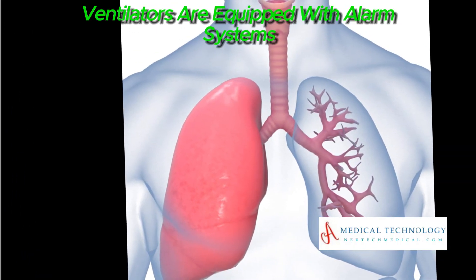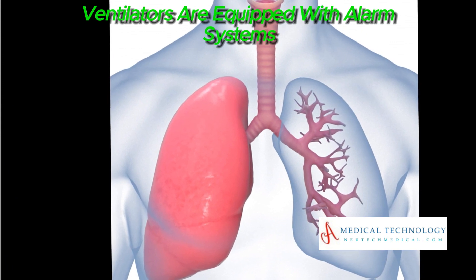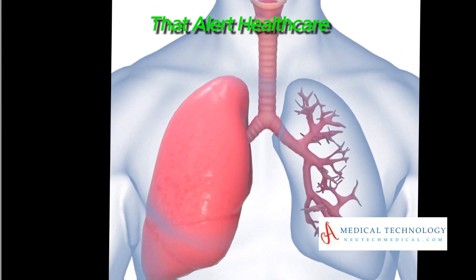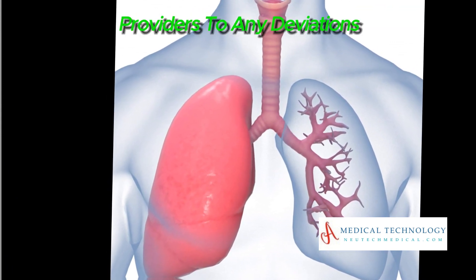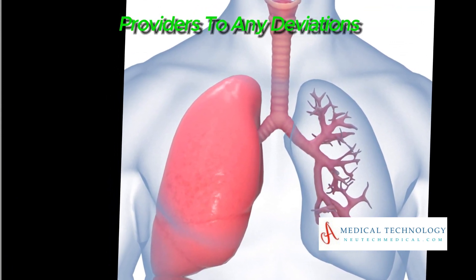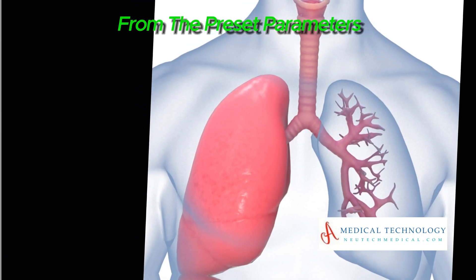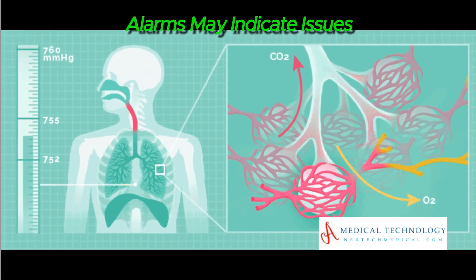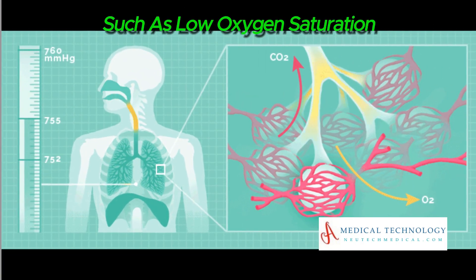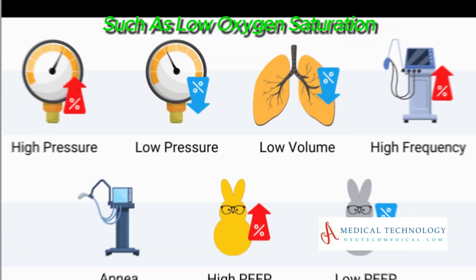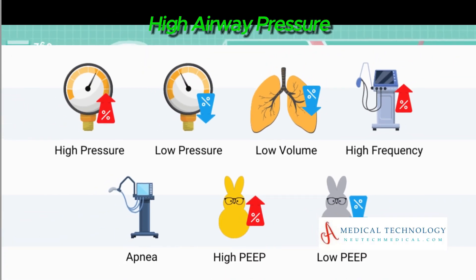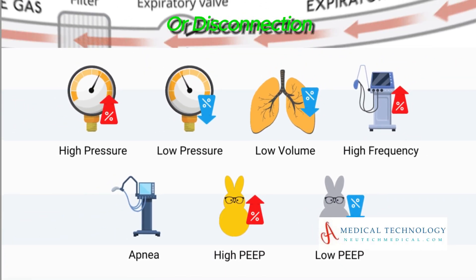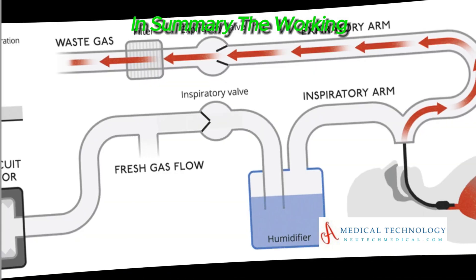Ventilators are equipped with alarm systems that alert healthcare providers to any deviations from the preset parameters. Alarms may indicate issues such as low oxygen saturation, high airway pressure, or disconnection.